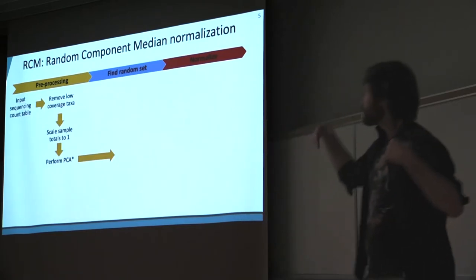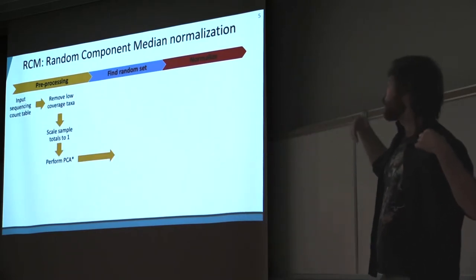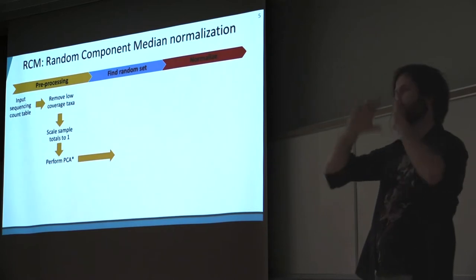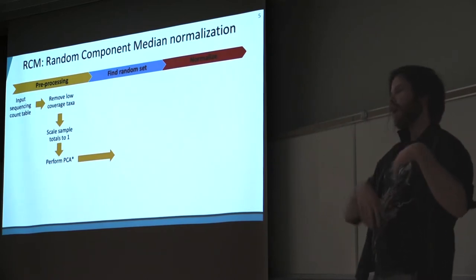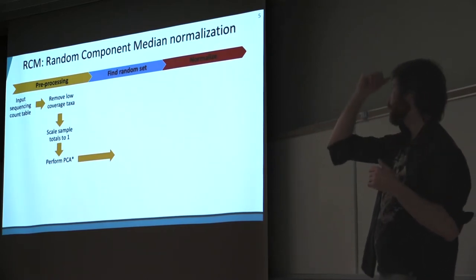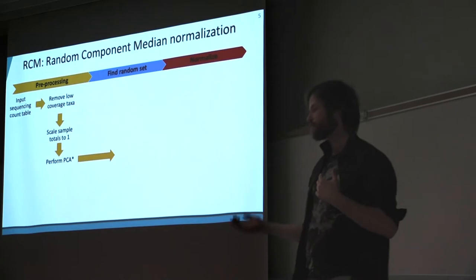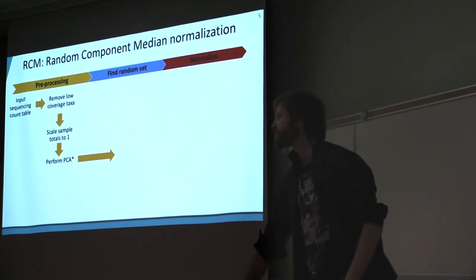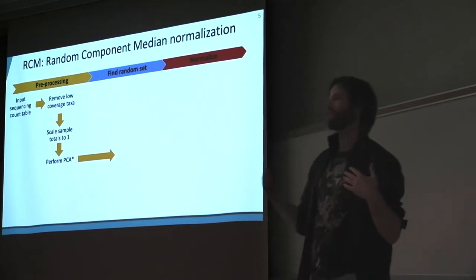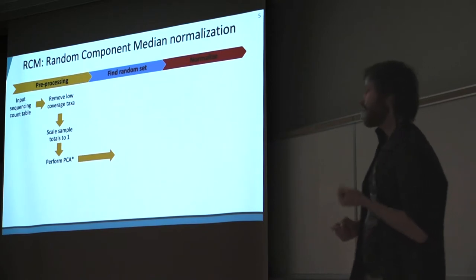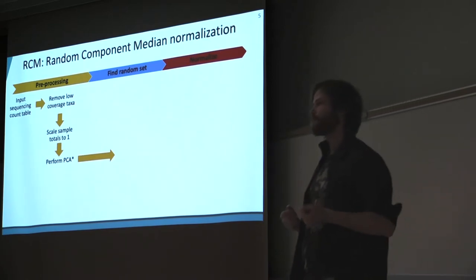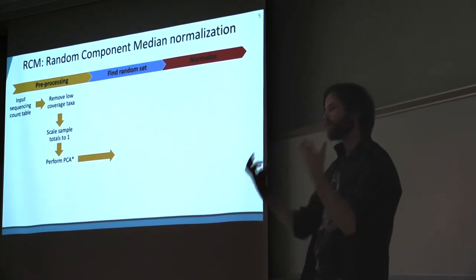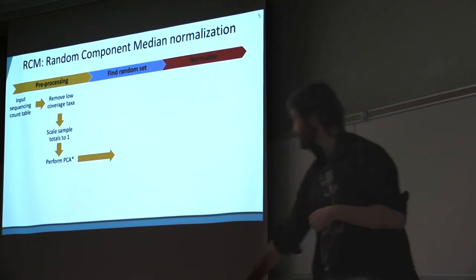The first step is pre-processing the data — once you already have your sequencing counts of different bacteria. You take in your sequencing counts, remove bacterial taxa that have low coverage across samples, scale everything to one to get relative abundances, and then perform principal component analysis to display your samples in a multi-dimensional space.